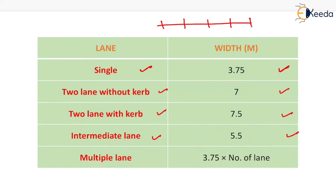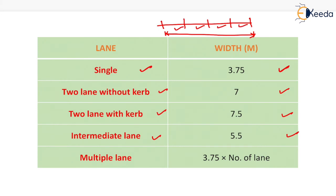So if we want to calculate the width of a four-lane pavement, it will be equal to 3.75 into 4, and that will be the overall width of the pavement.